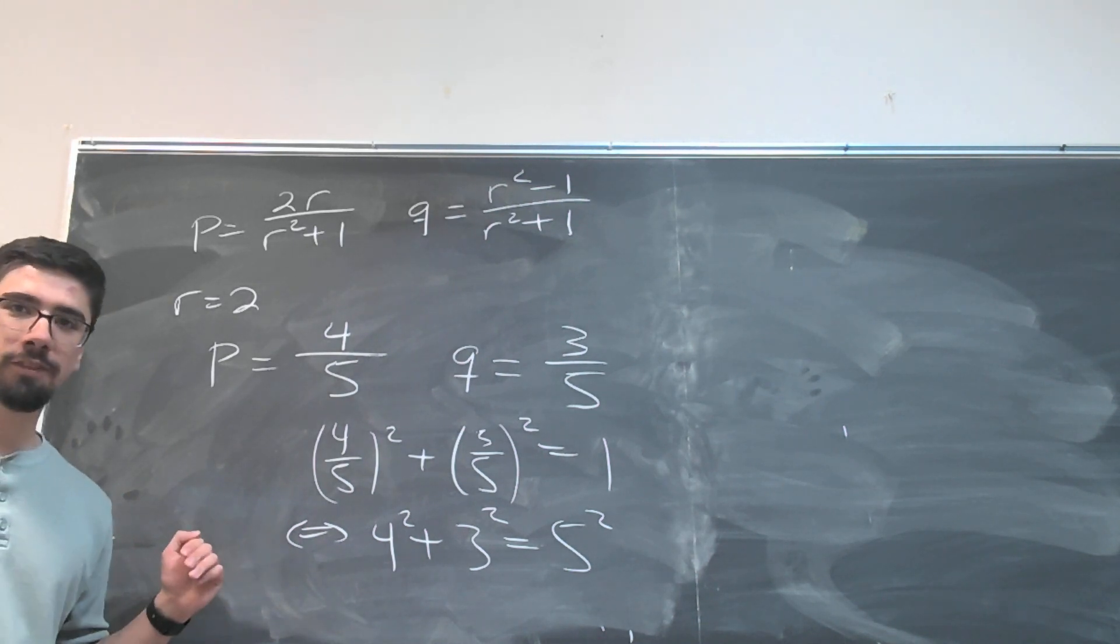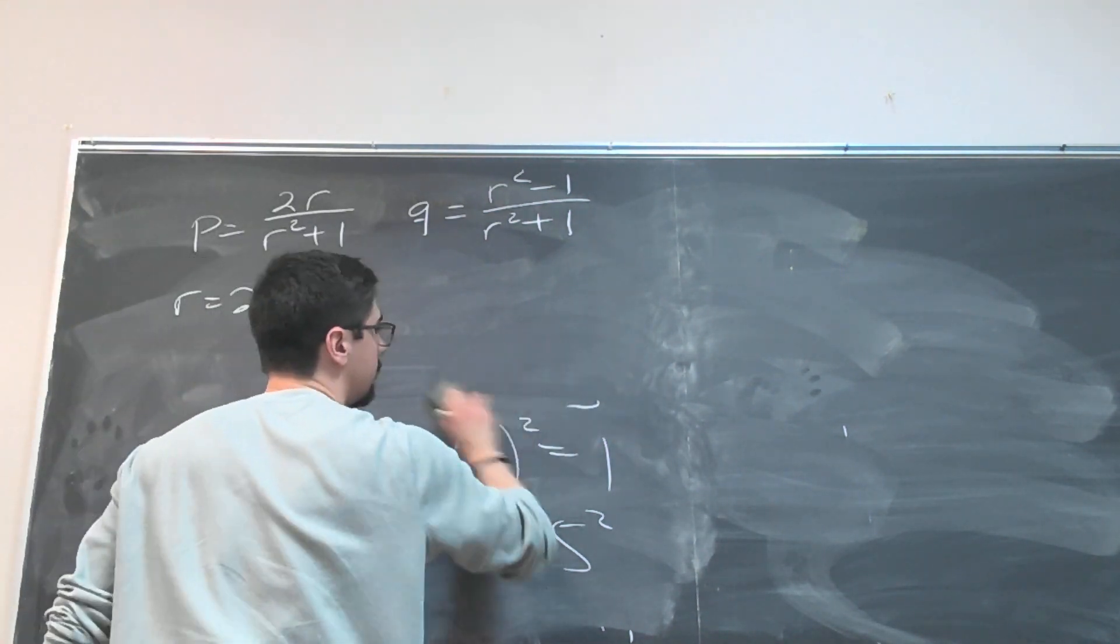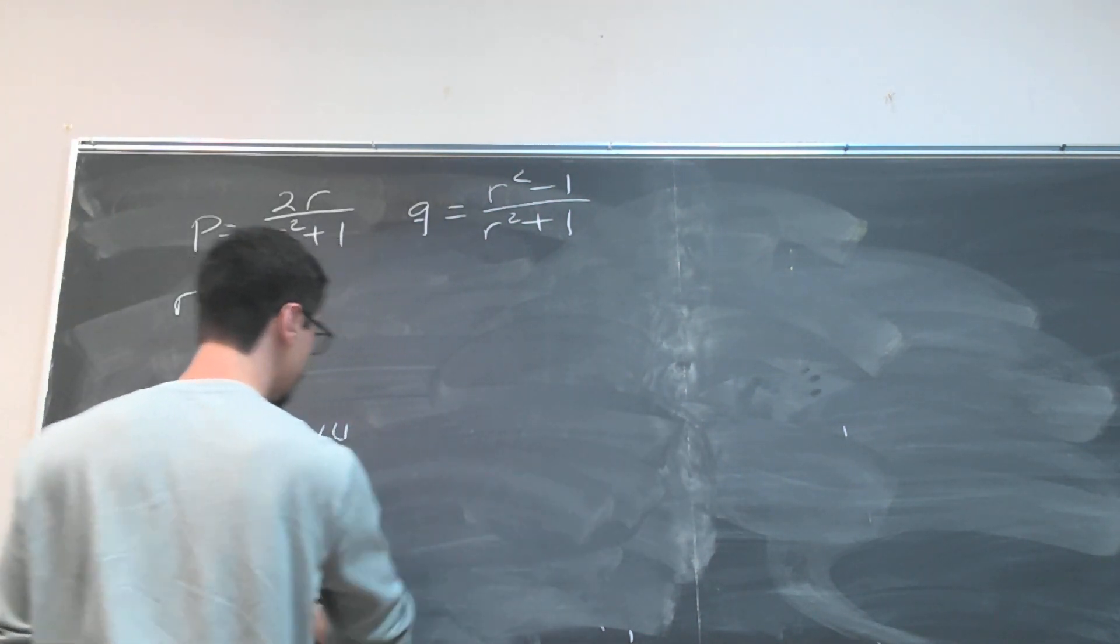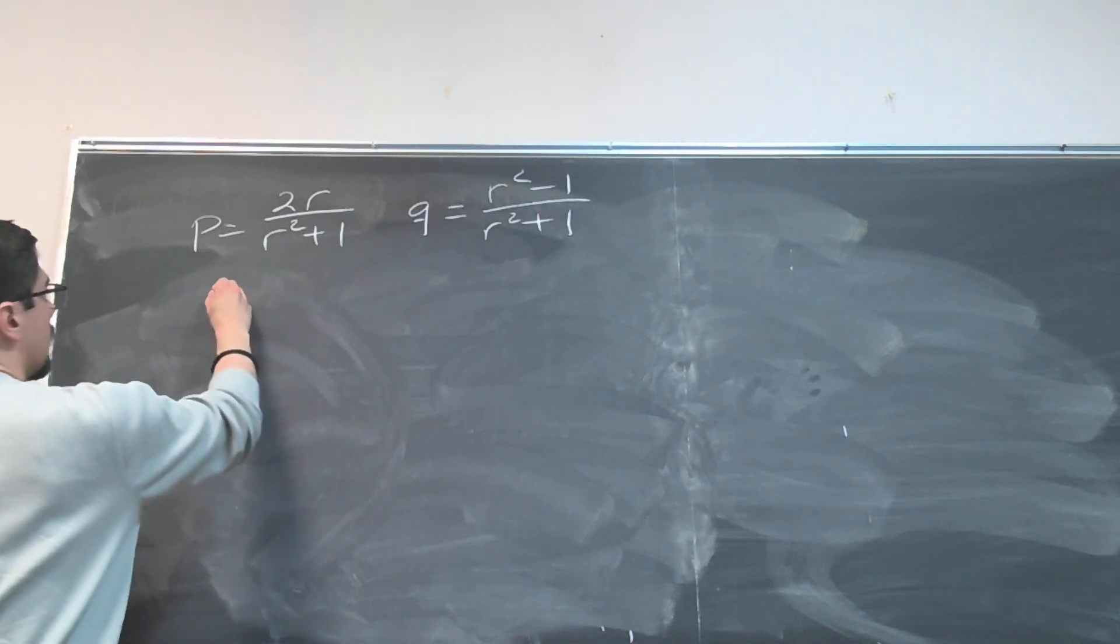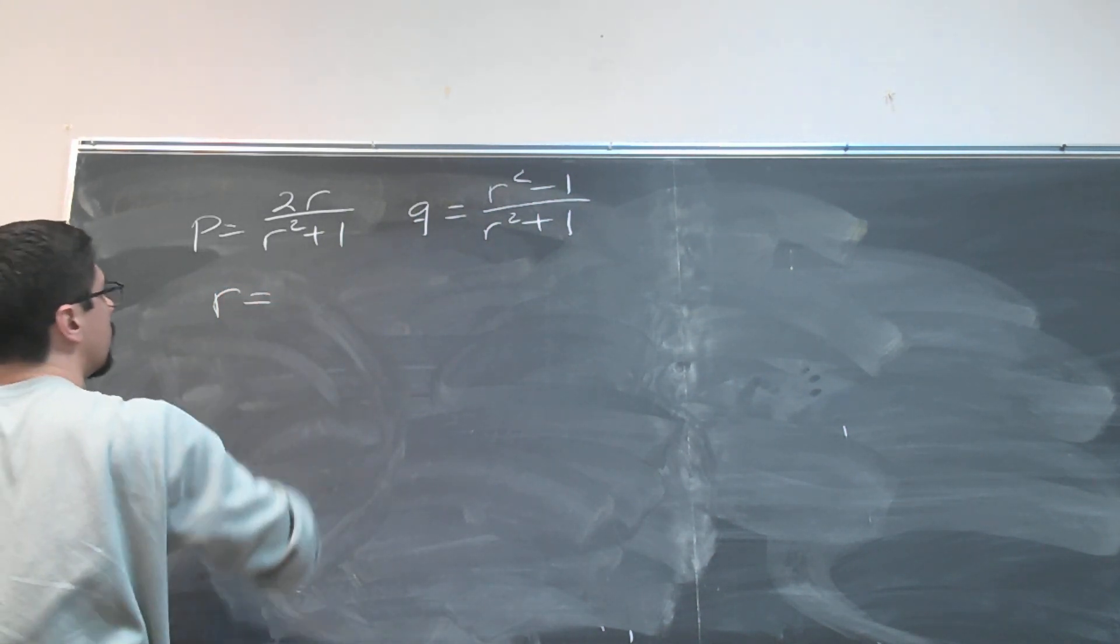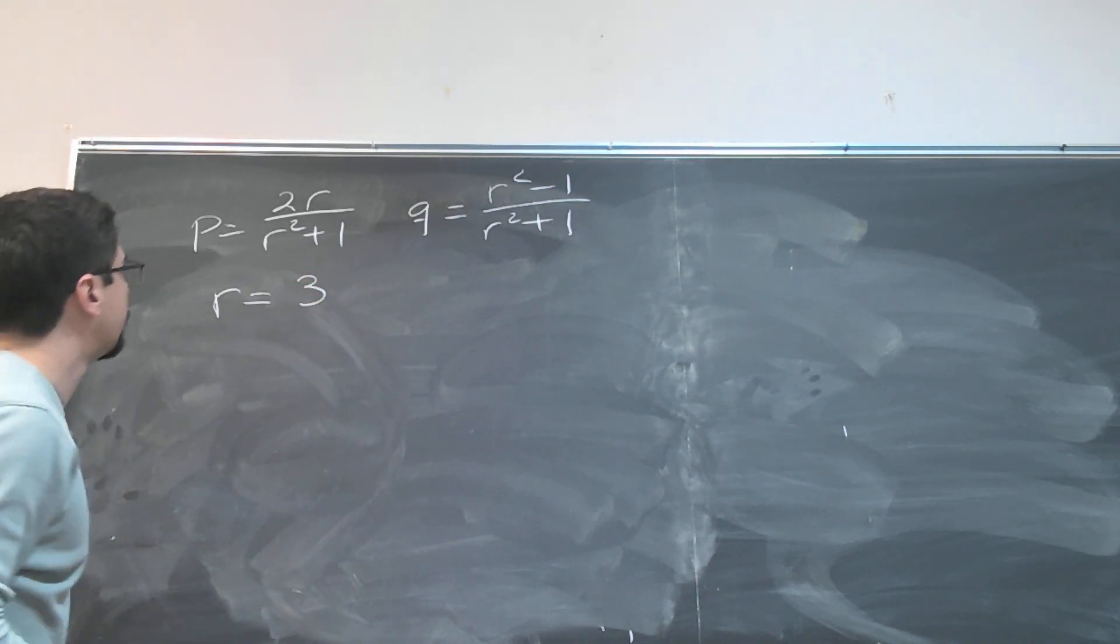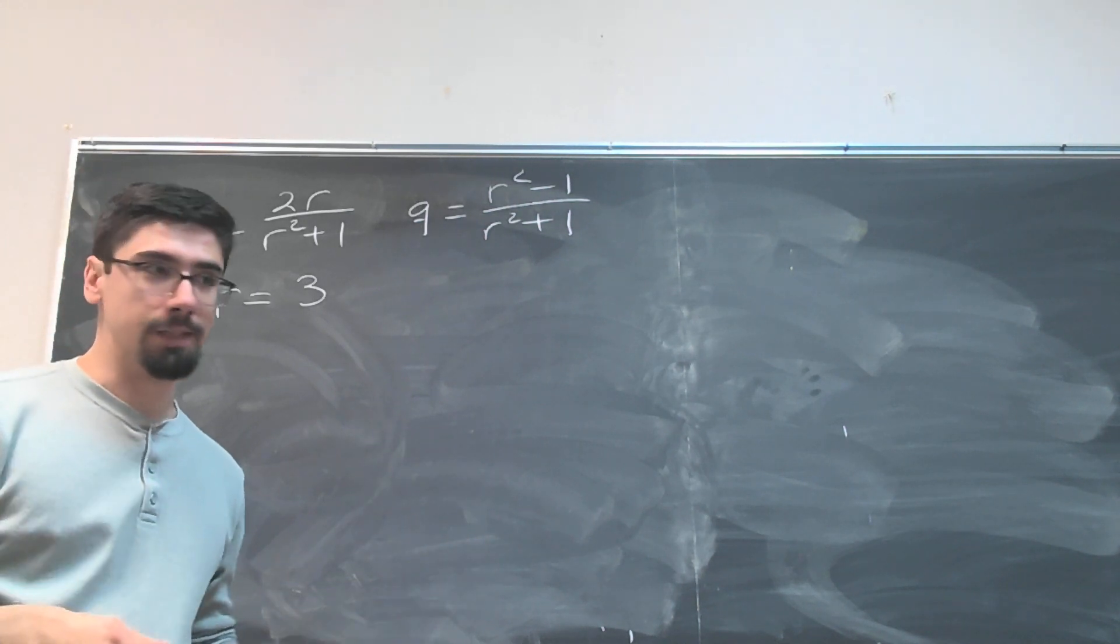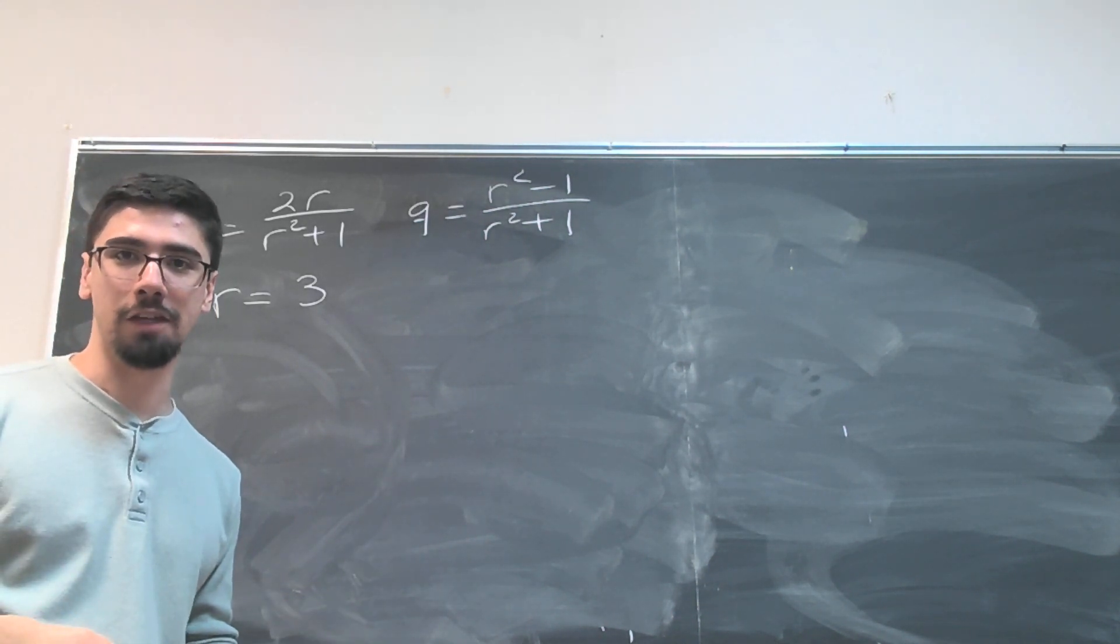And for the heck of it, let's just go ahead and do one more. Let's now try r is equal to 3. And of course you can plug in fractions too. I just feel less comfortable doing that on the spot. This is entirely improvised. Natural numbers are always great to work with.